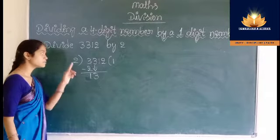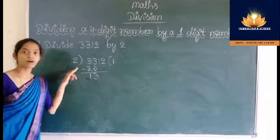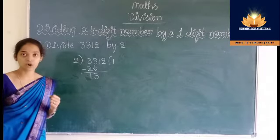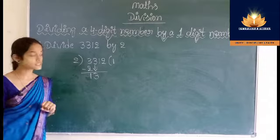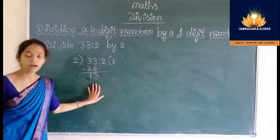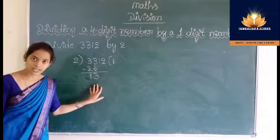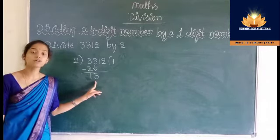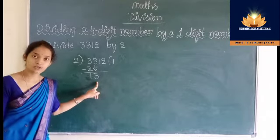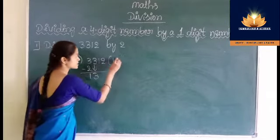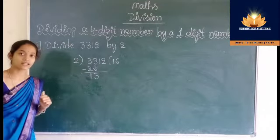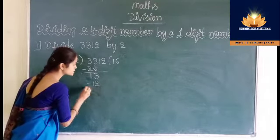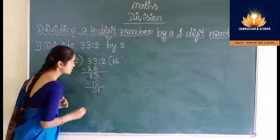Now divide 13 by 2: 2 ones are 2, 2 twos are 4, 2 threes are 6, 2 fours are 8, 2 fives are 10, 2 sixes are 12, 2 sevens are 14. Then write the product 12 below 13. Subtract: 3 minus 2 is 1, 1 minus 1 is 0.